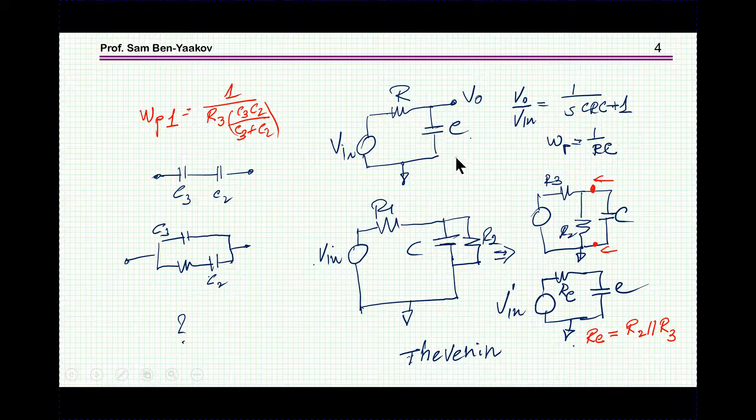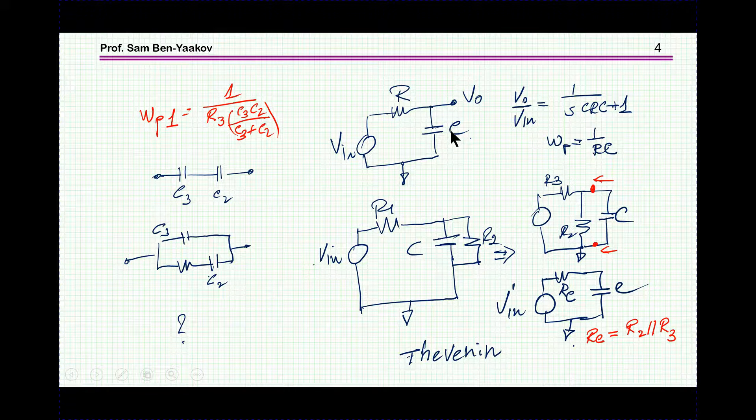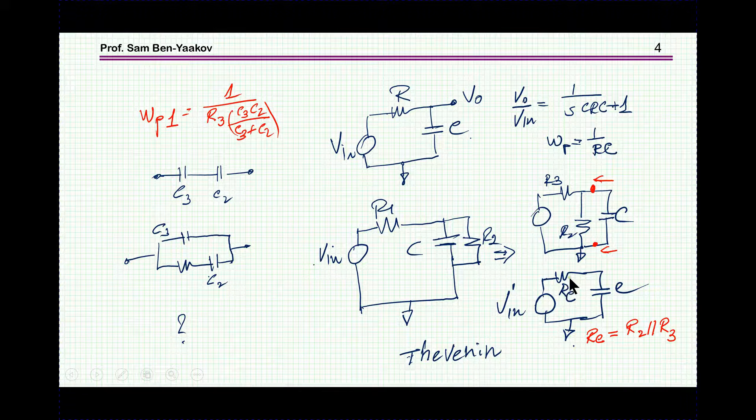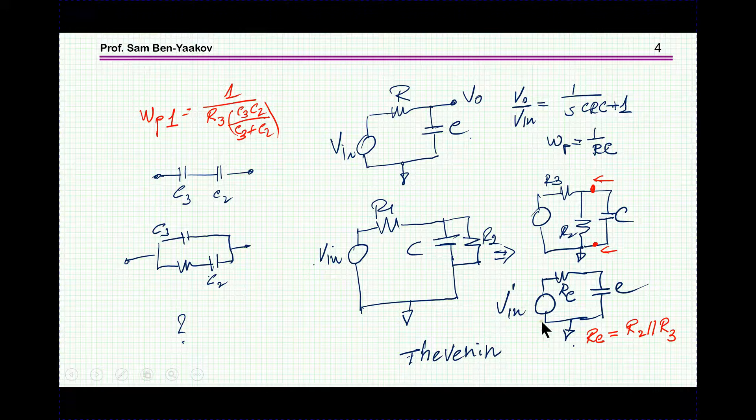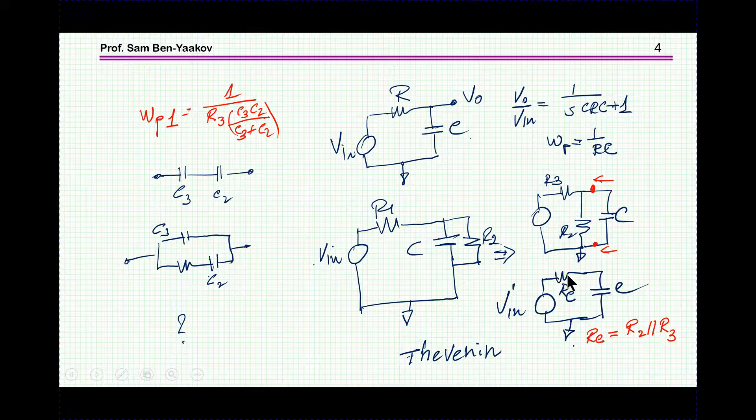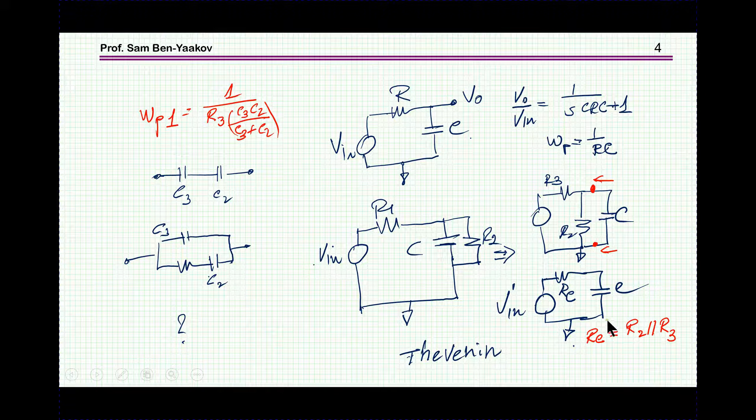A neat way to find out what is the time constant of a circuit that has one capacitor is to use the Thevenin approach, that is, we have this circuit here, separate the capacitor, look back, and find the equivalent resistor. I'm not interested in the equivalent source, I'm interested in this equivalent resistance, and of course, the time constant will be RC, and the location of the pole will be 1 over RC.